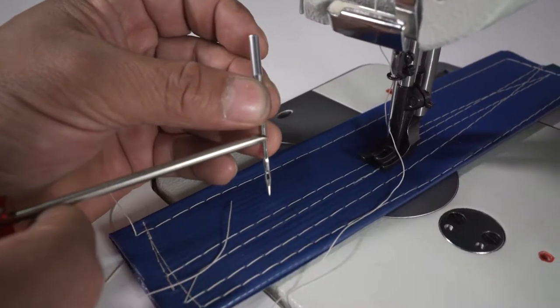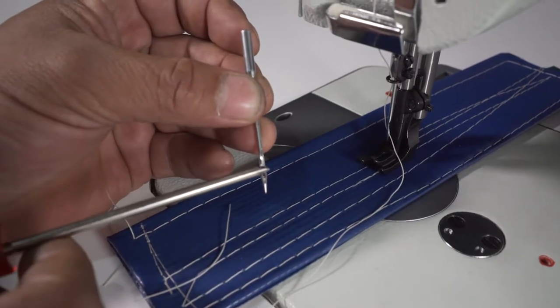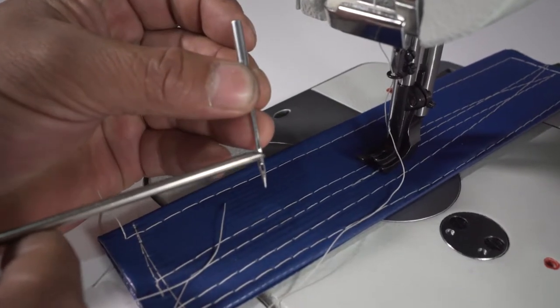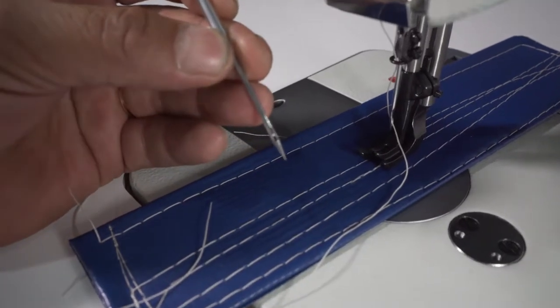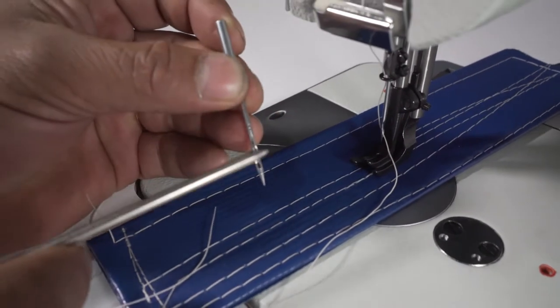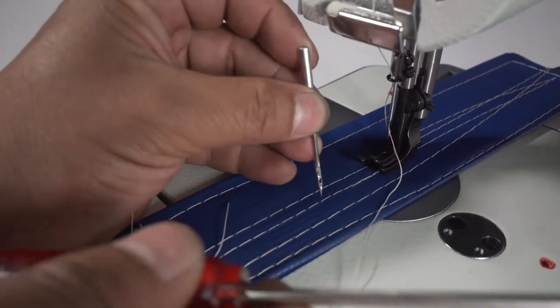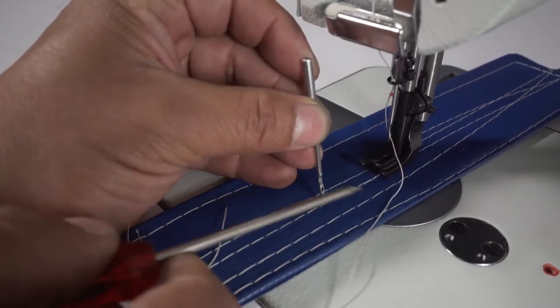This needle has two sides. One side is the scarf and the other side is the groove. The scarf has to be on the right side, pointing to the right side of the machine.